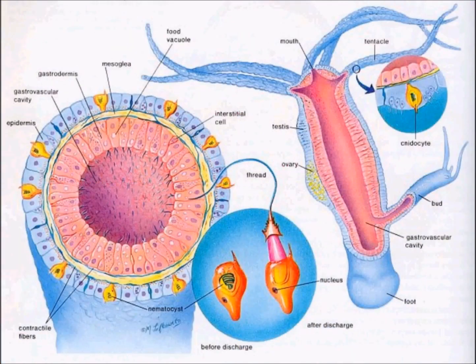This is the representation of a cnidarian. This is the mouth, and these are the tentacles where the cnidoblasts are present. These are the cnidoblasts present on the tentacles. This shows bud formation, this is the gastrovascular cavity, and this is the foot of the Hydra.